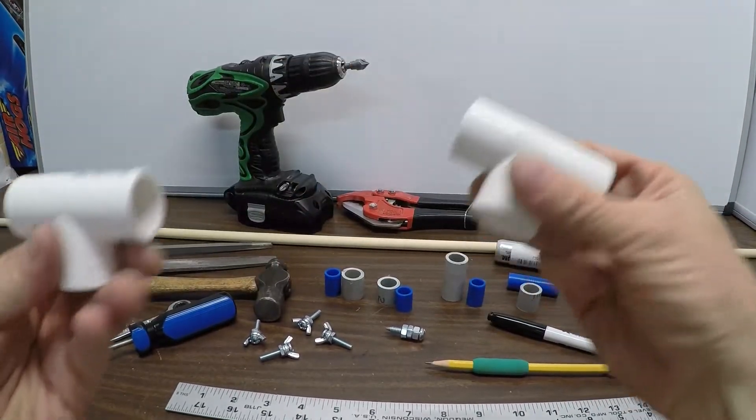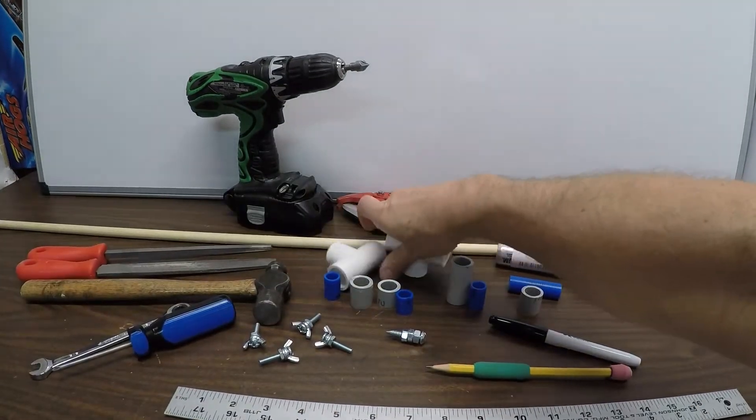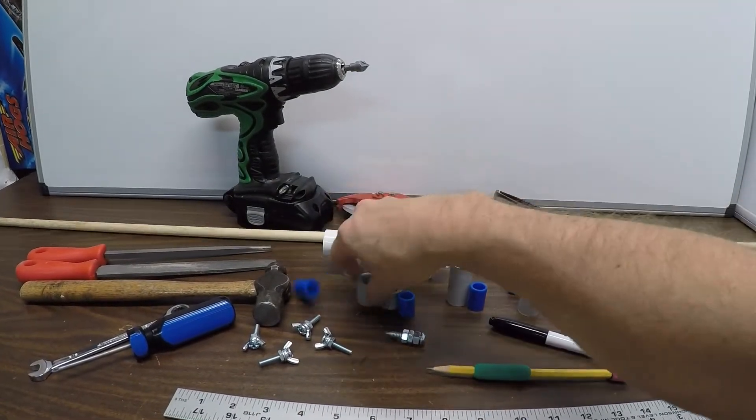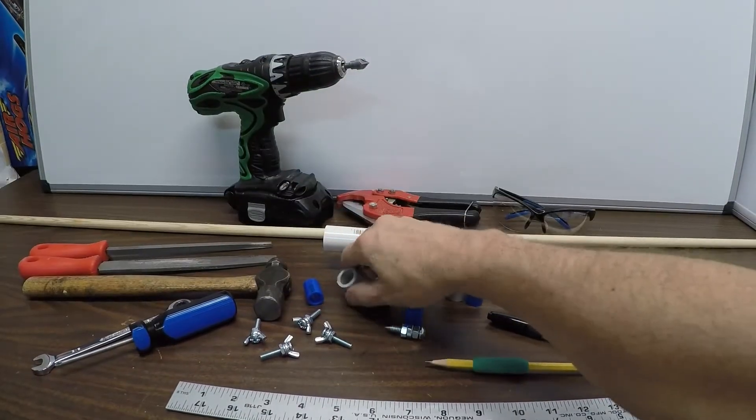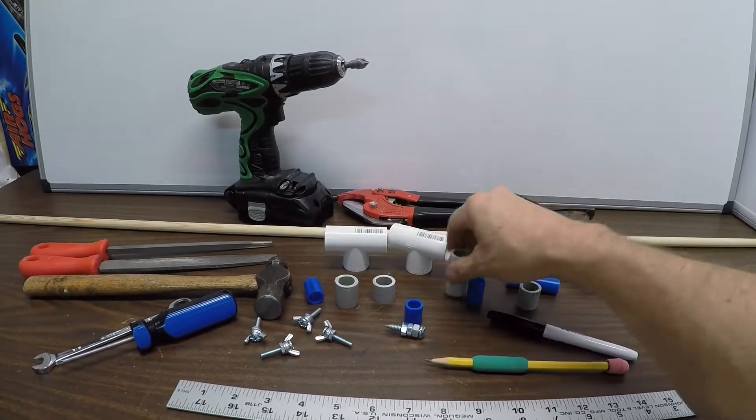Two half-inch tees. Assorted scrap half-inch pipe. These are going to fit in the ends. This one's a little longer.